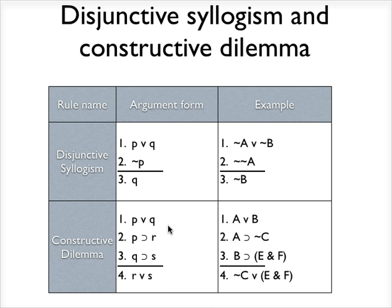Let me talk through it in English. What we're asserting is that either P or Q is true. If P is true, then R is true. And if Q is true, then S is true. Therefore, either R or S is true. That's the argument form that we call constructive dilemma.